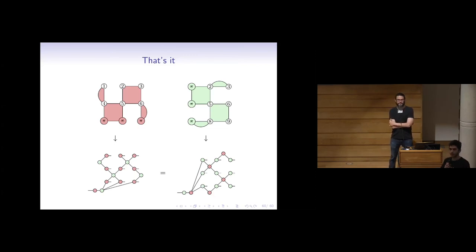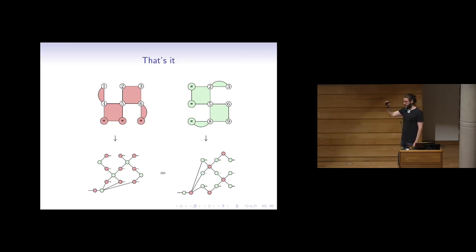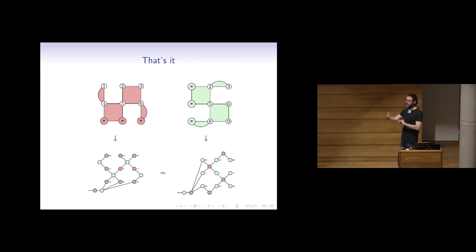Q&A: How much can you grok of non-CSS codes? We have a way to translate the generators of non-CSS codes into ZX diagrams, but it's not as nice. These diagrams are all flat — they have depth one — but in general, if things commute for non-trivial reasons, you might get a stack of things corresponding to each generator, and you'd have to commute them past each other. There might be a nice way to do it but we haven't figured it out yet. It's a good project.